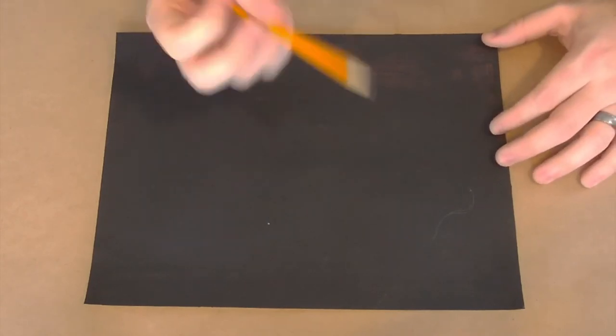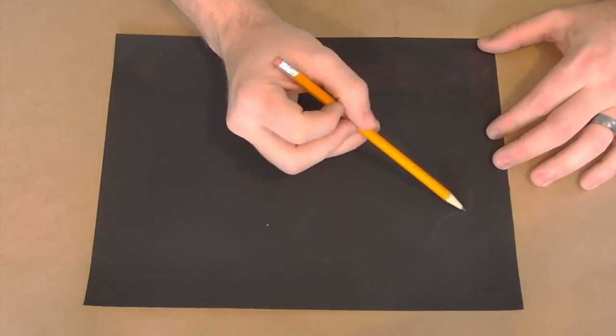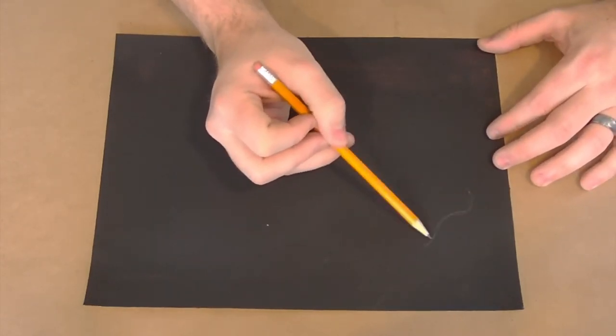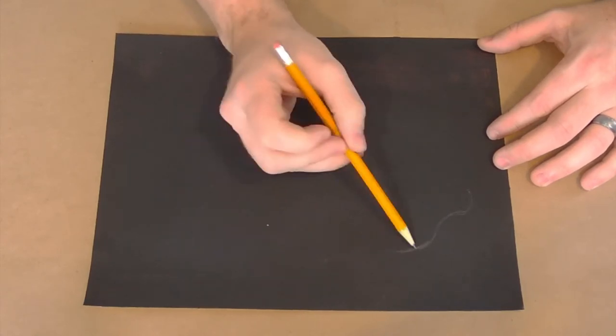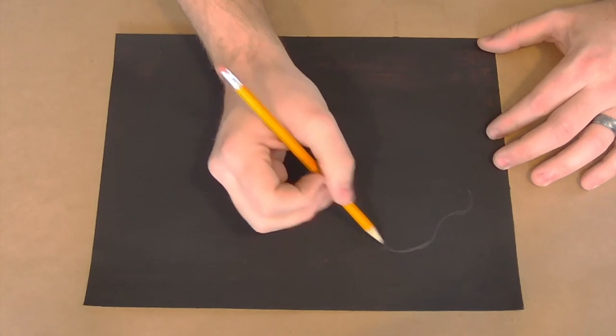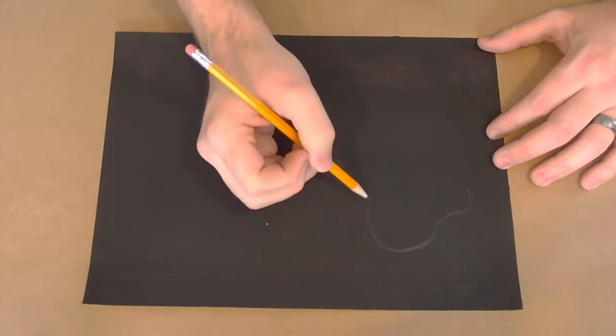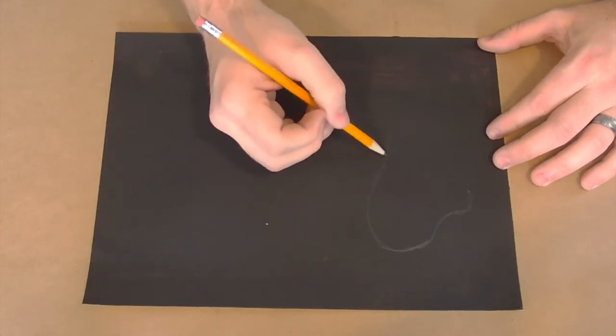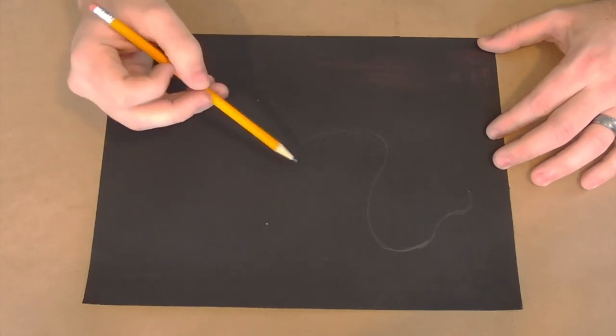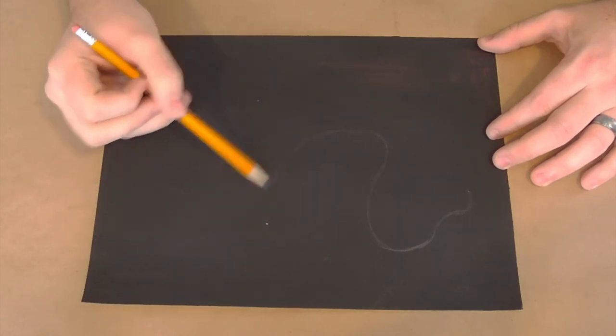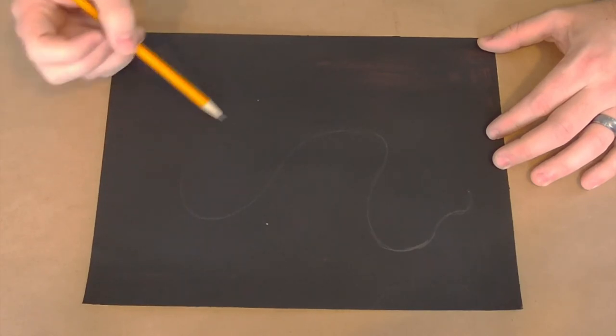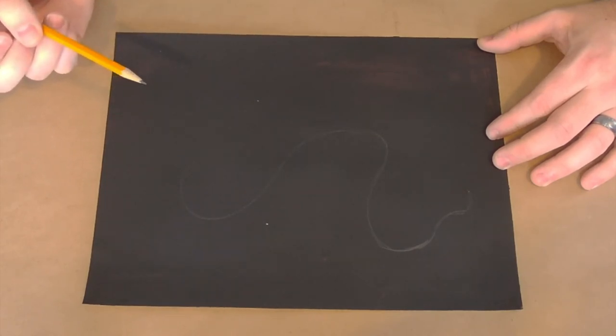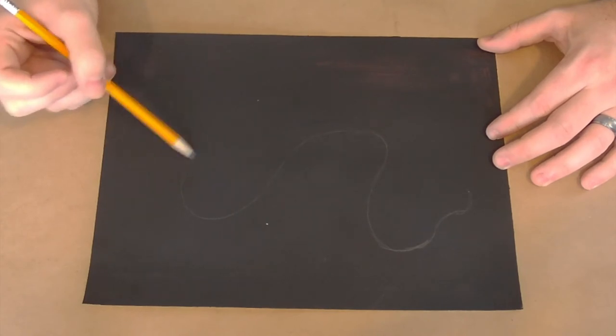When you're ready to move on to your scratch board you're going to, using a pencil, draw super light on your paper or on your scratch board. In fact, chances are you can't even see what I'm drawing here because I'm drawing so light. You want to avoid pressing too hard into your scratch board at this point because any scratches that you make into your scratch board are permanent.